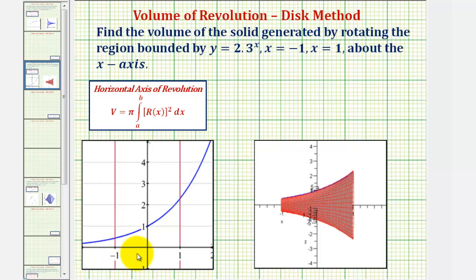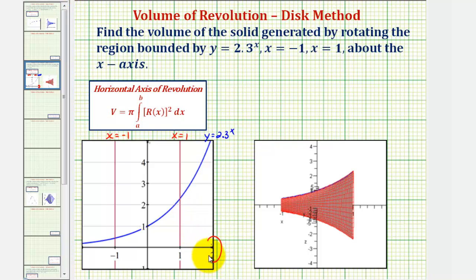Looking at our graph here below, here's x equals negative 1, here's x equals 1, and here's our function y equals 2.3 raised to the power of x. We're rotating about the x-axis, and therefore the bounded region would be this region here. If we rotate this region about the x-axis, it creates this solid, and our goal is to find the volume of this solid.